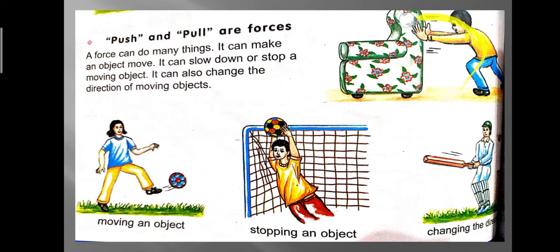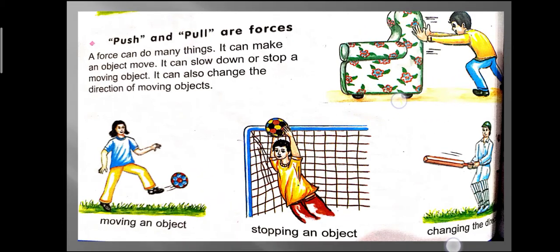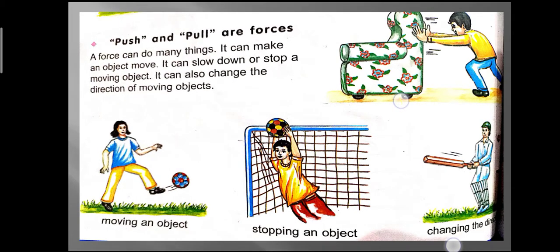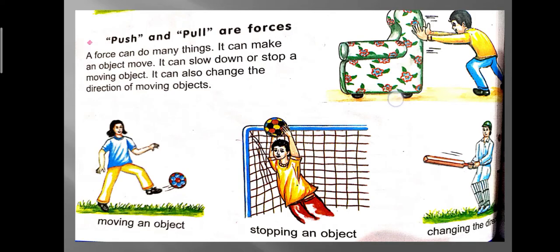Look at this picture — the boy is pushing the sofa. Before the boy pushed it, was the sofa moving? No, a sofa cannot move by itself unless we apply force. As the boy pushes it, the sofa moves in the direction of the force. The boy is pushing the sofa in a certain direction — that is the direction of force — so the sofa moves in that direction.